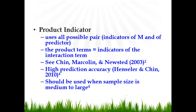The product indicator method is superior in terms of prediction accuracy, and some researchers suggest that it should be used when sample size is medium to large.